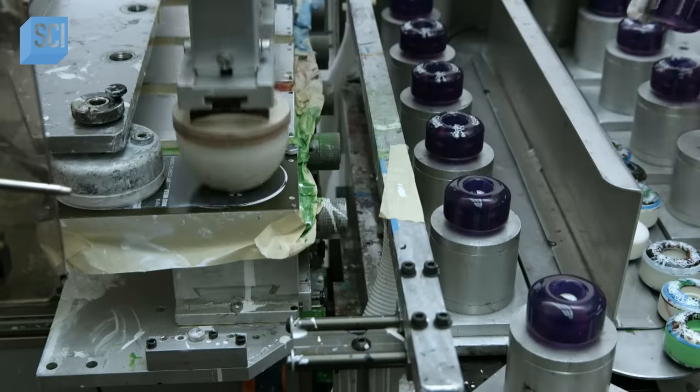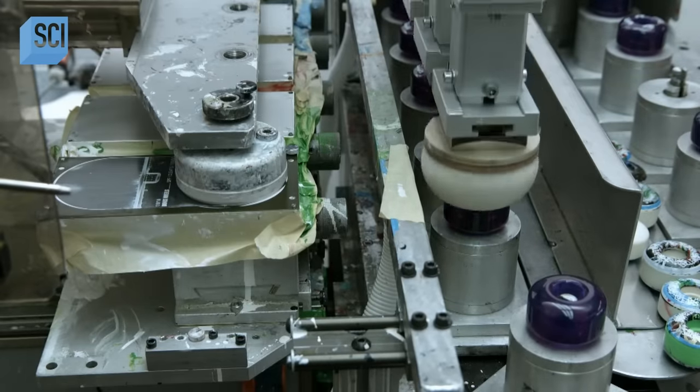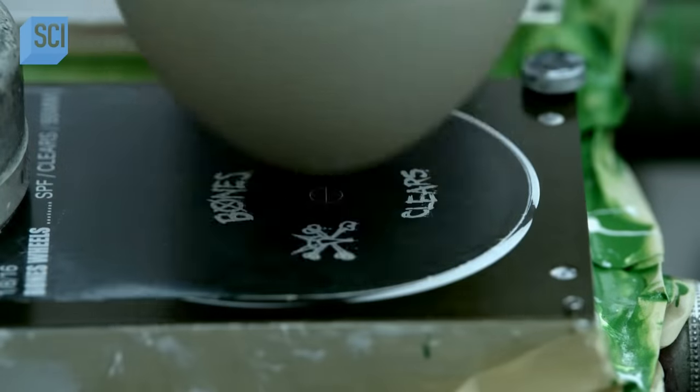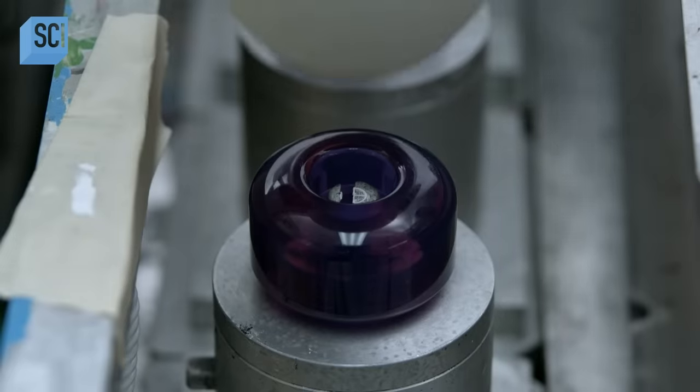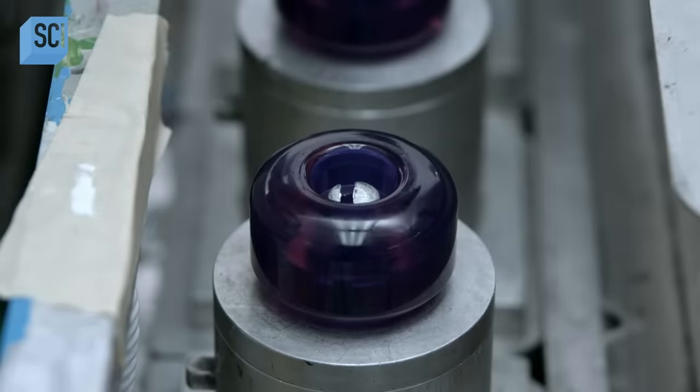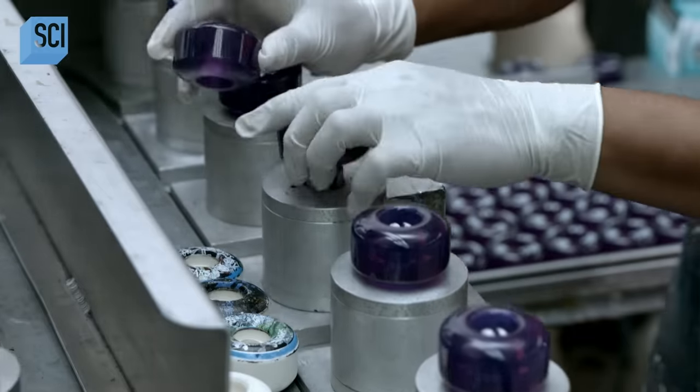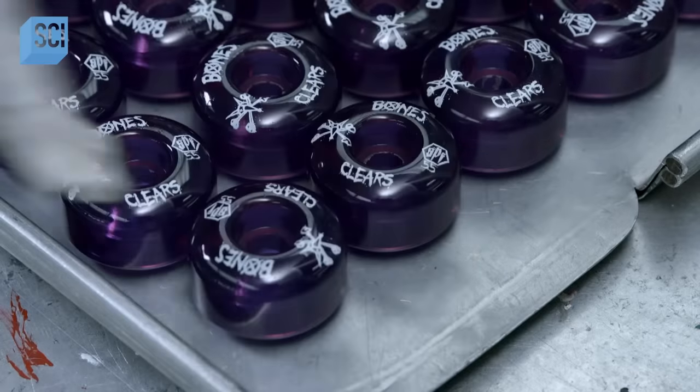The ink cup deposits ink on the printing plate. A silicone pad picks up the inked image and stamps it onto the skateboard wheel. The operator removes the printed wheel and sets it on a tray.